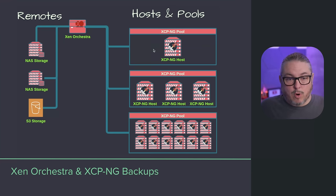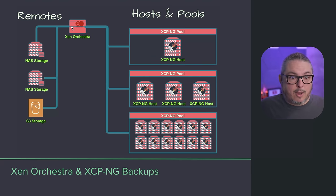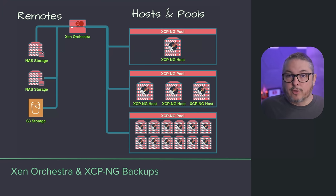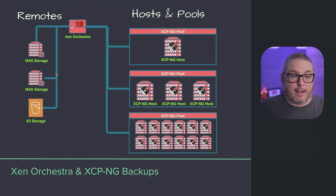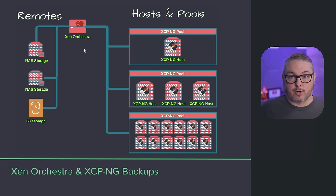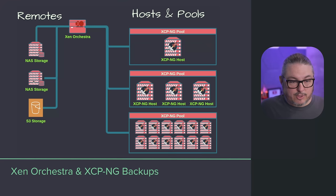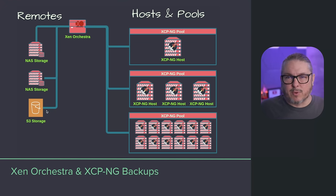One of the ways it works is it's pulling data from the host — any one or all of them — going through Xen Orchestra and then to NAS storage. There's no direct path between a host and NAS storage when it comes to backups; it always passes through Xen Orchestra. The NAS storage options include SMB, NFS, and S3, which is currently in beta.